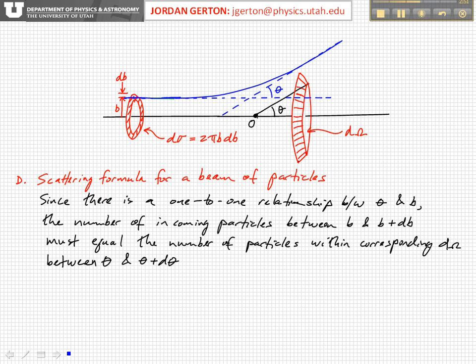Okay, and then what we realize is that particles, incoming particles in the beam that pass through an annular differential cross-section, d sigma, which is equal to 2 pi B, which is the circumference of the inner part of the circle, times db, so that's the area of this annulus.